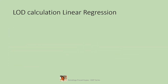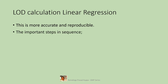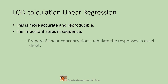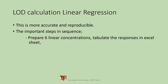Let us see how LOD calculation is done by a linear regression method. This is more accurate, reproducible, scientific, and justifiable. The important steps in sequence are: prepare six linear concentrations and tabulate the responses in an Excel sheet. First, six linear concentrations of any impurity should be made.